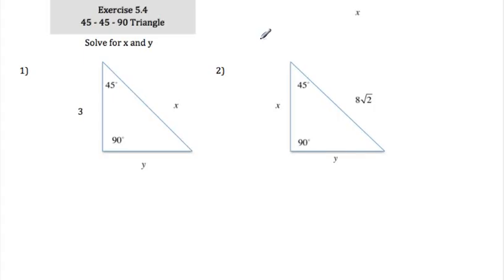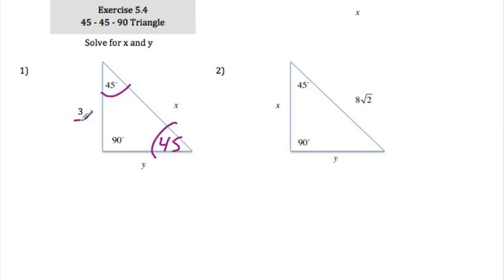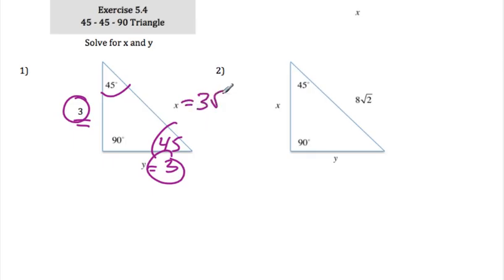We're going to go over the 45-45-90 triangle. In the book, it goes over the rules. If this is 90 and that's 45, we know that's also 45. Since these two angles are equal, both legs are going to be 3. We know if two sides are equal, the third side is going to be that side times radical 2.